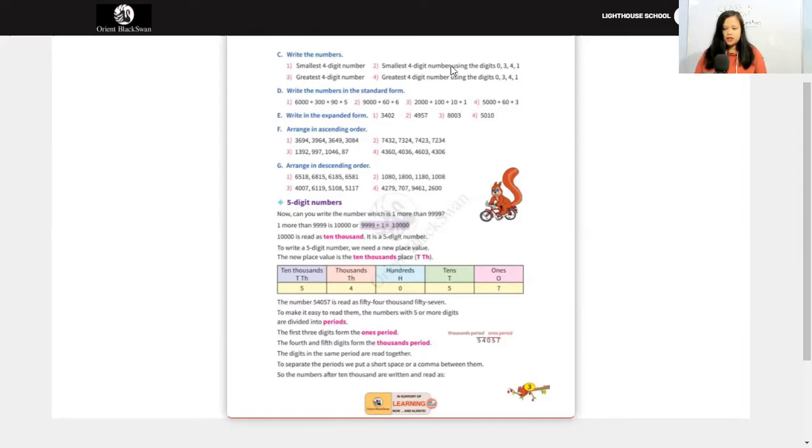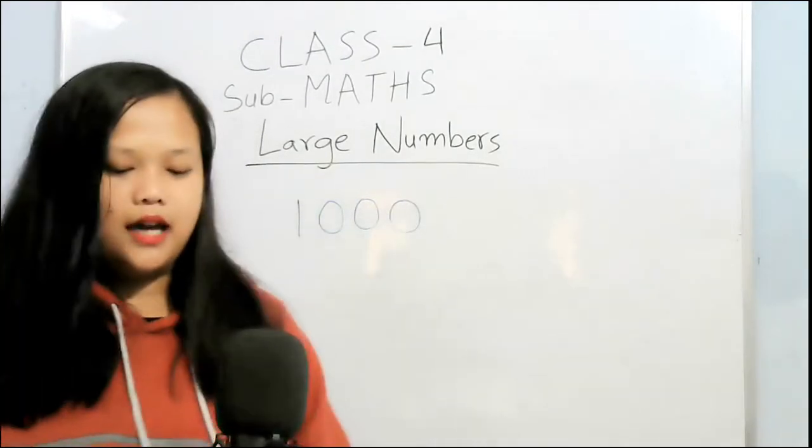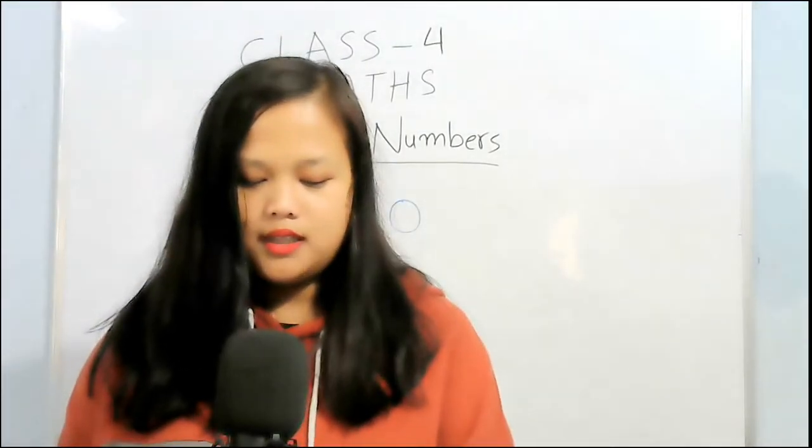Question number 1, smallest 4-digit number. Smallest 4-digit number means the number which is in 4 digits but it should be the smallest. 1,000 is the smallest 4-digit number.